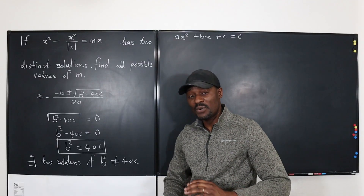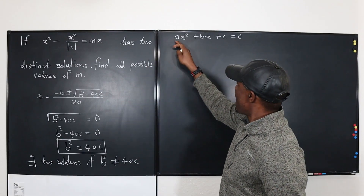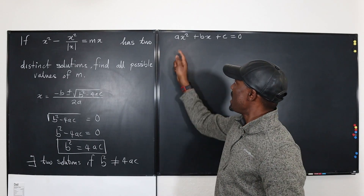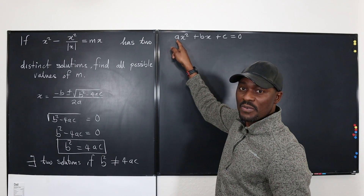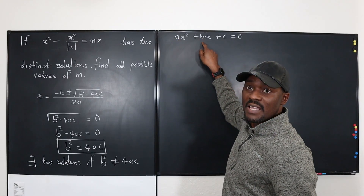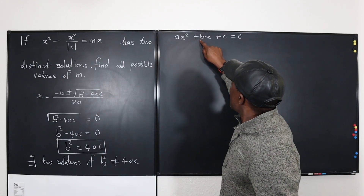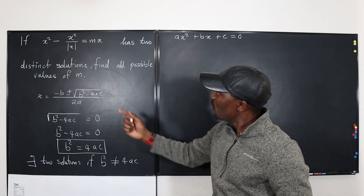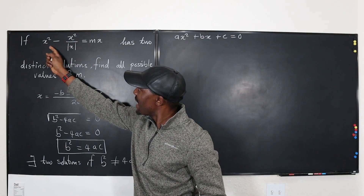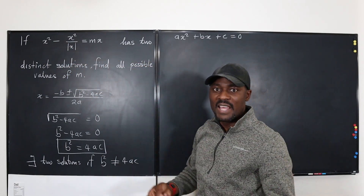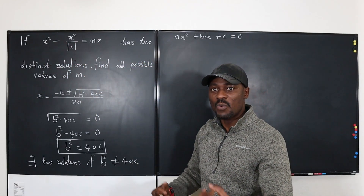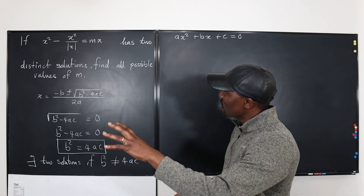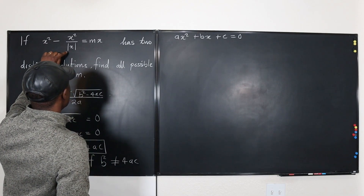Generally, for a quadratic equation, we write it as ax squared plus bx plus c, where a is the leading coefficient, b is the coefficient of x, and c is the constant. We have to try to write our equation in this form and then identify what a, b, and c are.